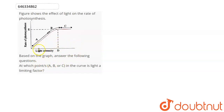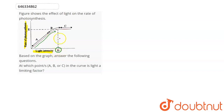Here we have a curve given. The X axis is light intensity and the Y axis is the rate of photosynthesis. We have points A, B, C, and D marked on the curve. As light intensity increases, photosynthesis rate also increases. At point D, light intensity is at optimum. If we increase light intensity beyond D, photosynthesis rate will remain constant — it will not increase further.